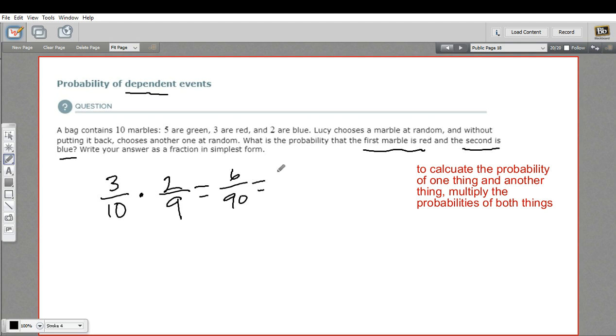Both of these are divisible by three. So this would be two, and this would be 30. Both of those are divisible by two. That would be 1/15.